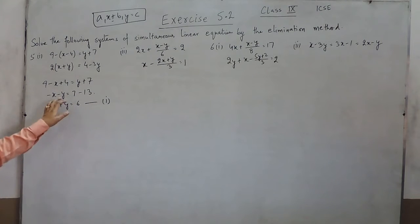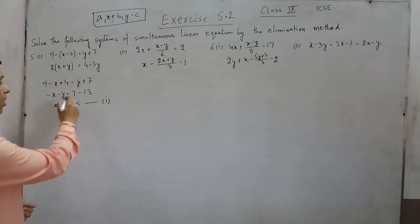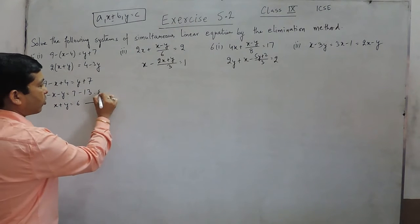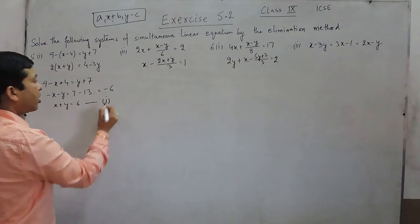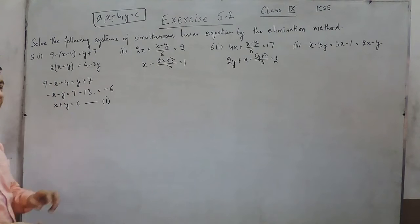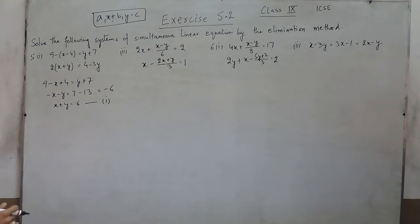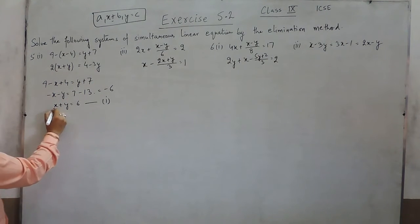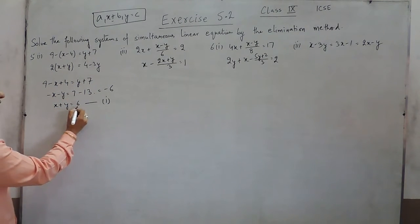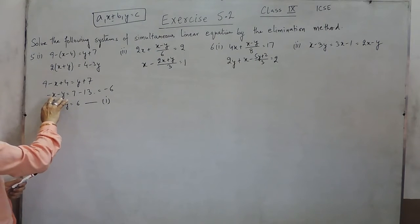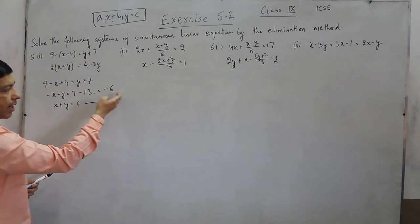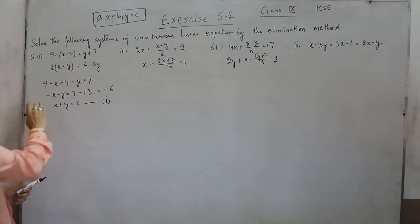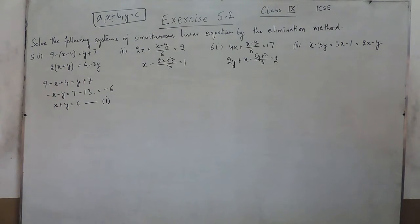What I am doing is 7 minus 13 comes out to be minus 6, so I am multiplying the whole equation by a negative sign so it becomes x plus y is equals to 6. Or I can say I am taking this on the right hand side and this on the left hand side, which does not make any effect on the question.